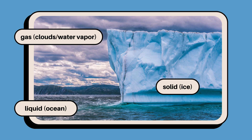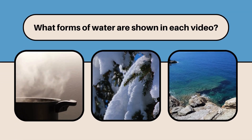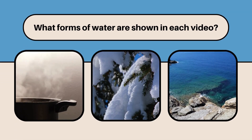Gas — clouds, water vapor. Solid — ice. Liquid — ocean. What forms of water are shown in each video?